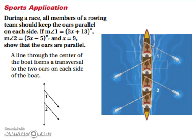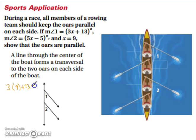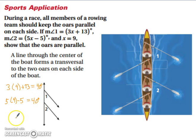Let's look at a sports application. During a race, all members of a rowing team should keep the oars parallel on each side. If the measure of angle 1 is 3x plus 13 and the measure of angle 2 is 5x minus 5, and x equals 9, show that the oars are parallel. Substituting 9: 3 times 9 plus 13 gives us 40 degrees, and 5 times 9 minus 5 also gives us 40 degrees. Therefore, they're parallel. That concludes our lesson on proving lines parallel.